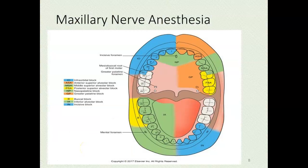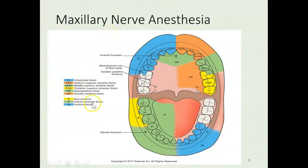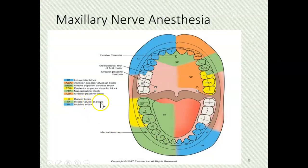This is really important in dentistry because dentists can give freezing before dental work so the patient doesn't feel pain. Knowing which arteries they're freezing tells you what's numb. For example, a dentist could perform an inferior alveolar block by numbing around that artery, which would numb all the mandibular teeth as well as the chin and lip.